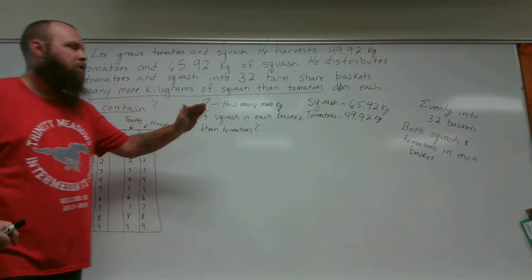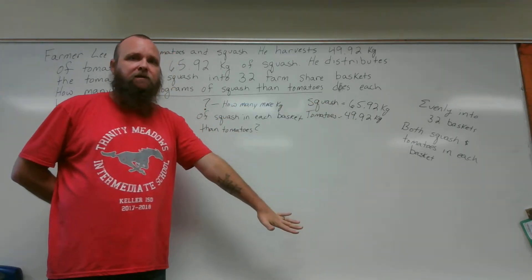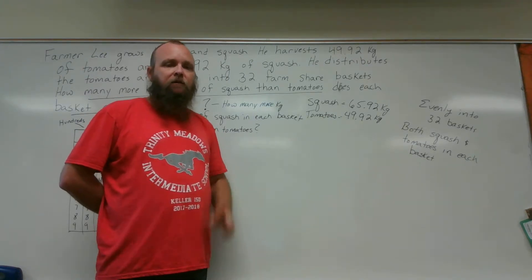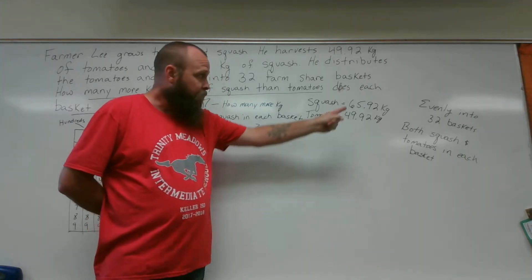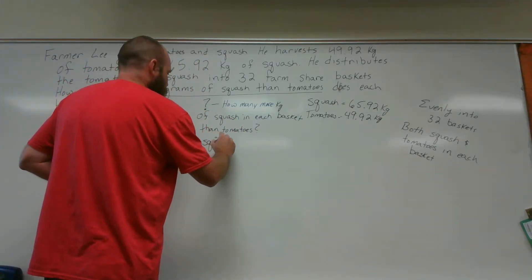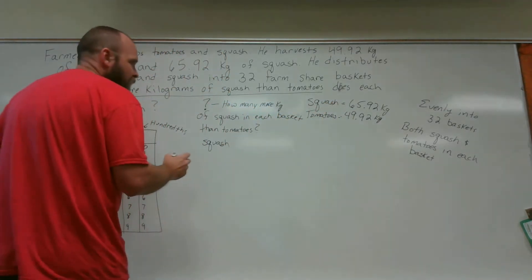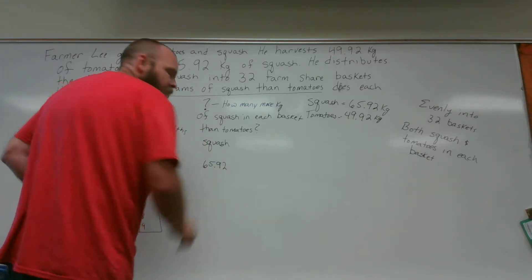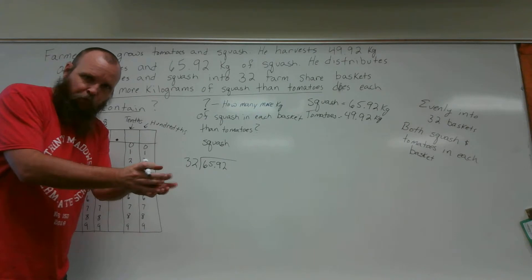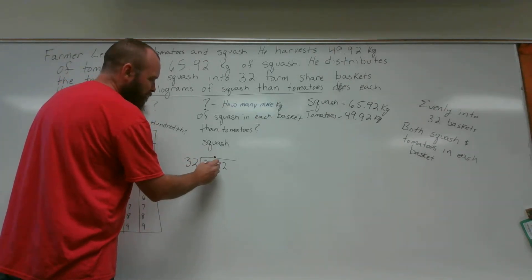Now let me ask you this, do we know how much squash is in each basket? Nope, we do not. We know how much total squash there is, but we don't know how much in each of the baskets. Do we know how much tomatoes in each basket? Nope. We know how much the total weight in kilograms of the tomatoes, but we don't know how much is in each basket. So the first thing we have to do and the second thing we have to do is find out how much squash in each basket and how much tomatoes in each basket. So let's start with the squash. Okay, so we have this much, 65 and 92 hundredths, kilograms of the squash, and we're dividing that into 32 baskets. 32 equal baskets. So I want to make this much weight into 32 equal groups. My decimal point comes straight up, and then essentially I'm done with it. I don't even need to look at it again.